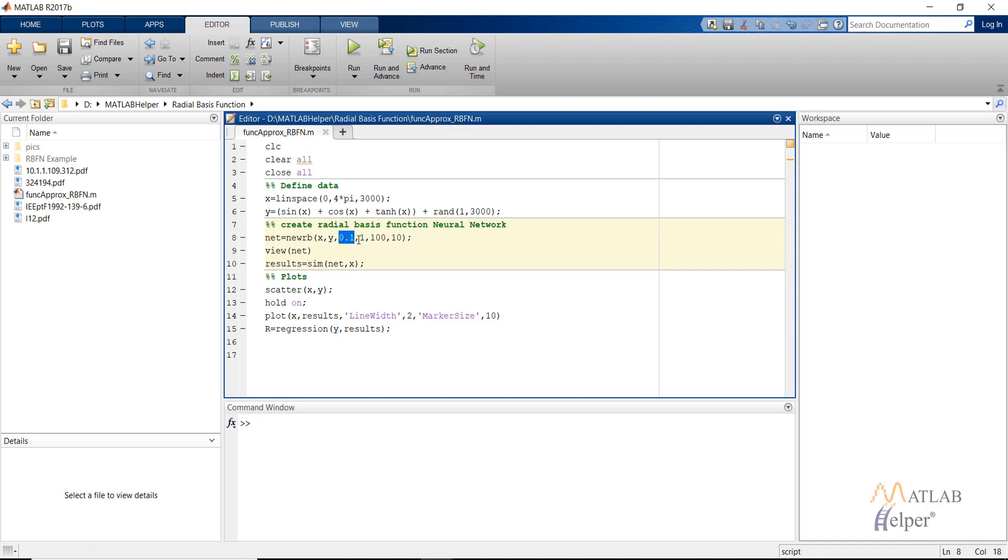Then we have the spread. Spread is a parameter which basically defines how many Gaussian neurons we would require to smoothly fit a function. The larger the spread, the smoother will be the function approximation.